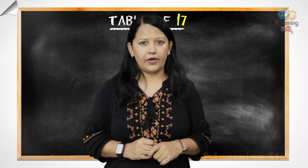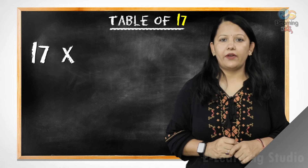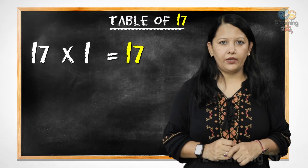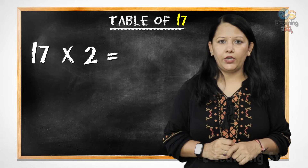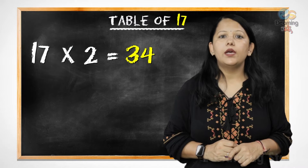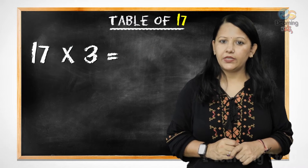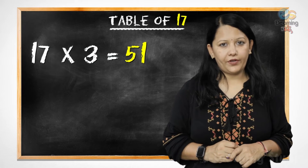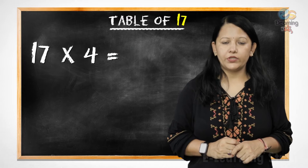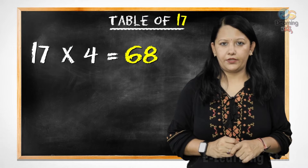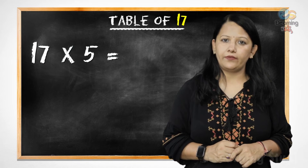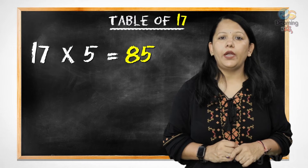Let's start. 17 ones are 17, 17 twos are 34, 17 threes are 51, 17 fours are 68, 17 fives are 85,